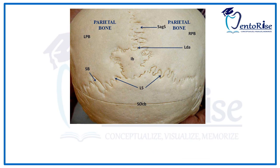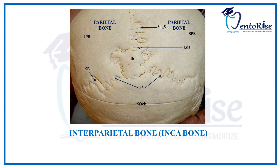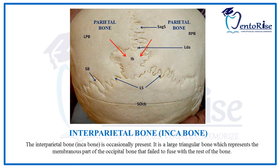The next feature of Norma Occipitalis is the presence of the interparietal bone, also called the inca bone. This inca bone is not present in all skulls — rather, it is very occasionally present. It is a large triangular bone present between the two parietal bones, representing the membranous part of the occipital bone that failed to fuse with the rest of the bone. It is marked in the figure with red arrows.